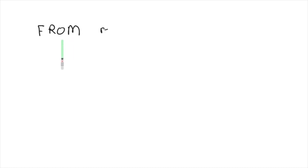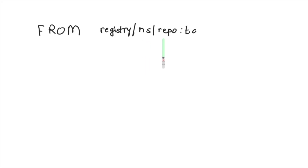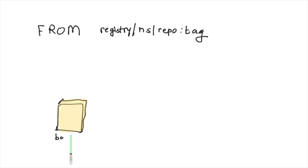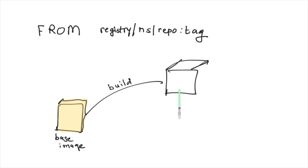The very first instruction in the Dockerfile is FROM. This has to be the first instruction because the Dockerfile is executed sequentially and you need a base image in order to build yours. FROM takes the image format in four fields including the registry, namespace, repository, and finally the version or tag. That's how you define your base image, which is then used to launch intermediate containers during the build process.